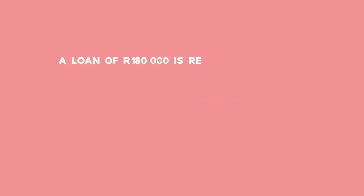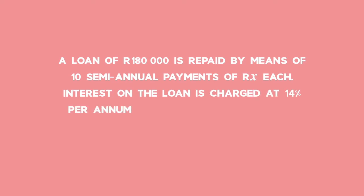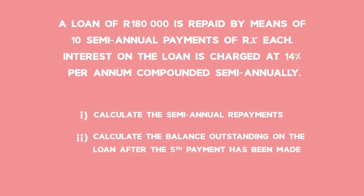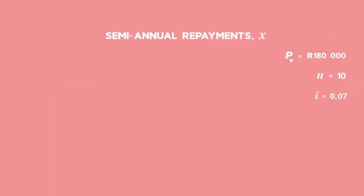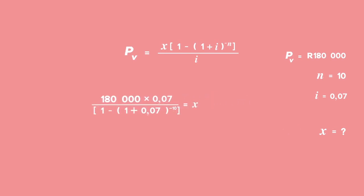Let's look at an example to work out the outstanding balance of a loan. A loan of R180,000 is repaid by means of 10 semi-annual payments of R each. Interest on the loan is charged at 14% per annum compounded semi-annually. Part 1: Calculate the semi-annual repayments. We work out the semi-annual interest rate by dividing 0.14 by 2 to get 0.07. Using the present value formula and substituting values for i, PV and n, x equals R25,627.95.